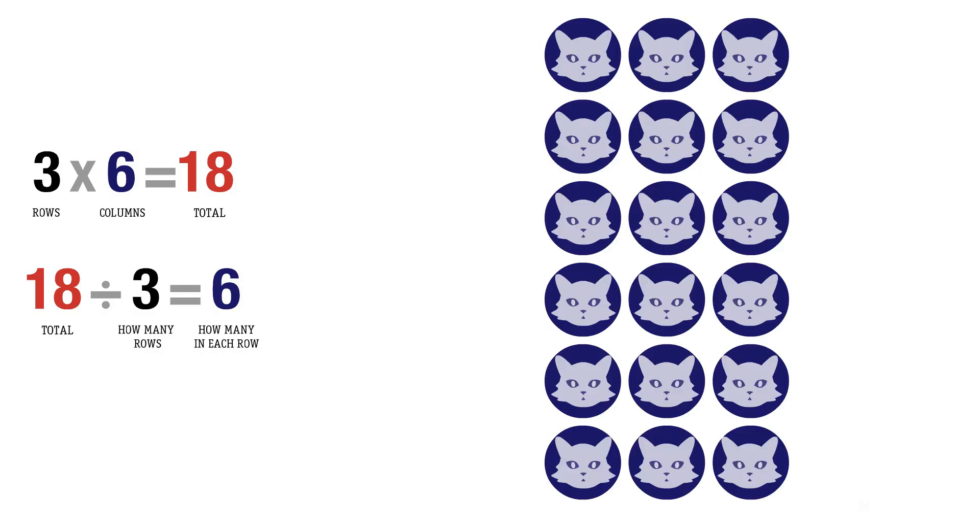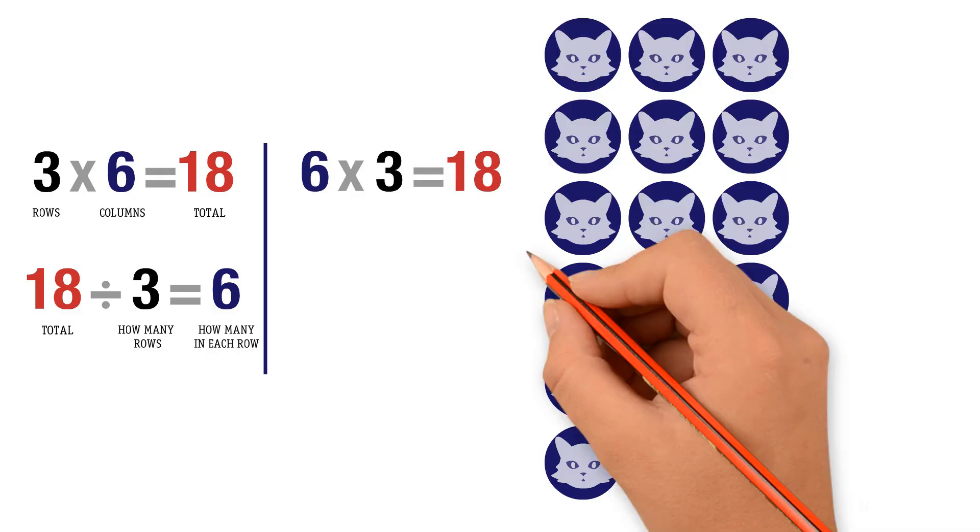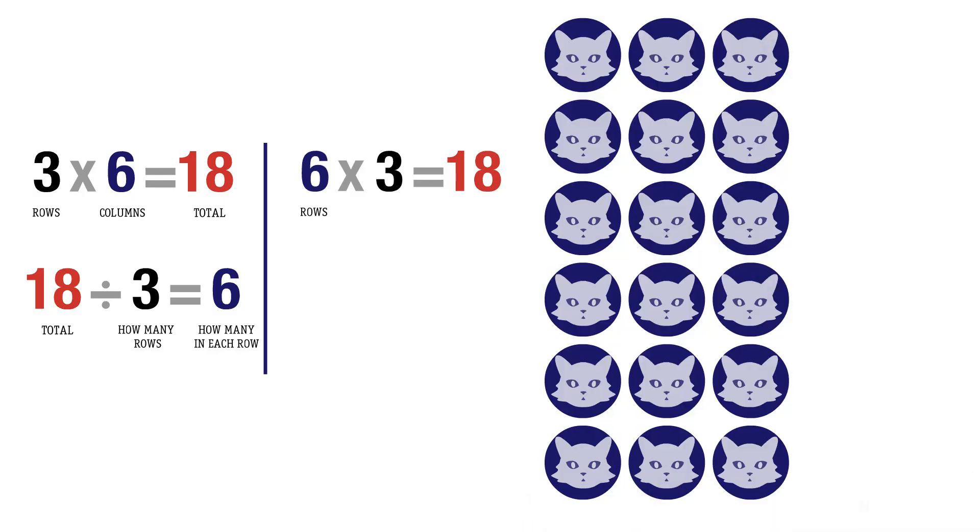Now we turn our array vertically. The total number of cats remains to be 18. However, we have 6 rows and 3 columns. This changes our multiplication fact from 3 times 6 to 6 times 3. We have 6 rows, 3 columns, and 18 cats in total.